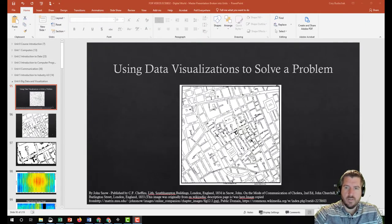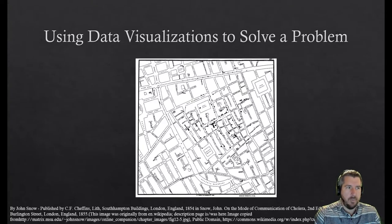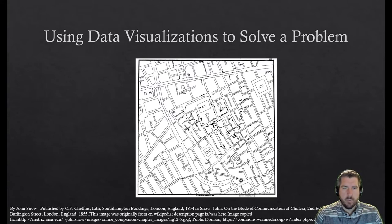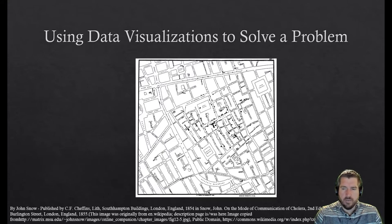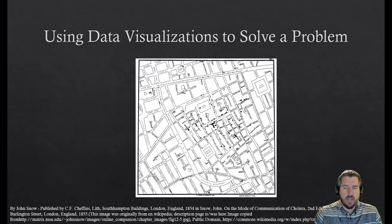Welcome to Unit 6 — this is all about using data to solve problems. The first thing we're going to look at is a very simple form of data visualization: a hand-drawn map of London in the 1850s drawn by someone called John Snow — which is kind of funny if you like Game of Thrones. People in the city were getting sick with cholera.